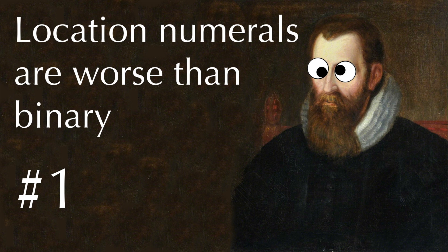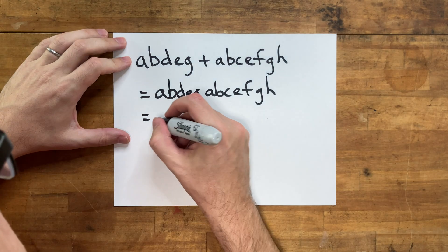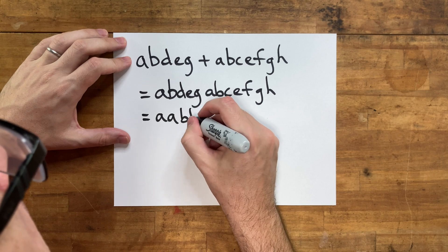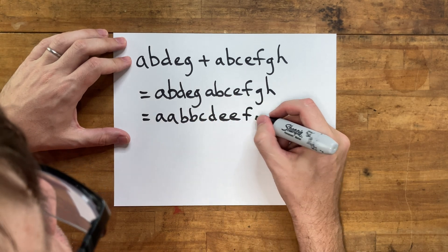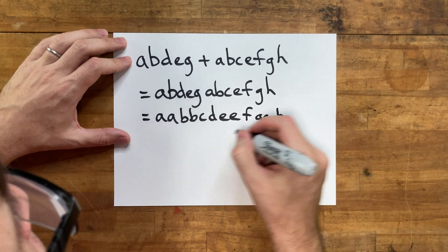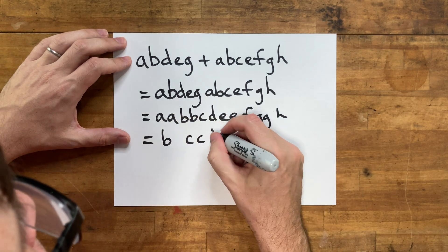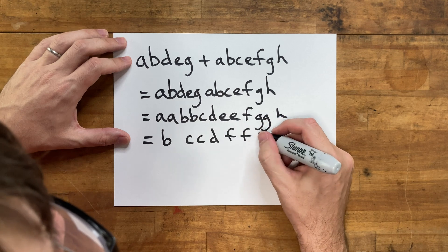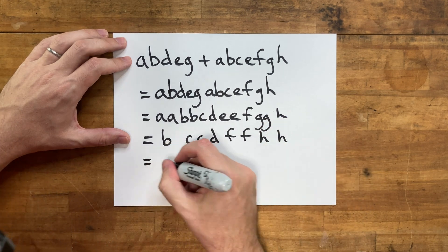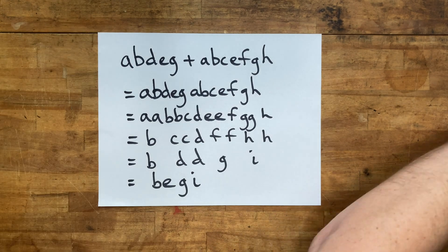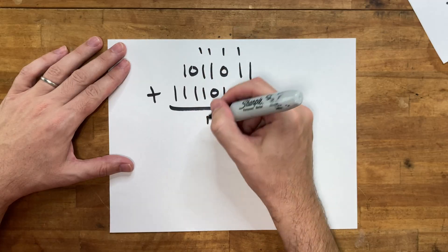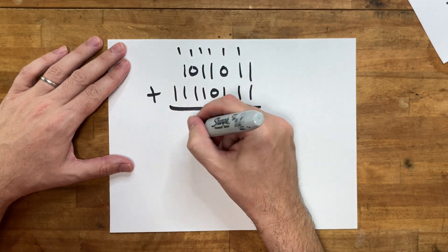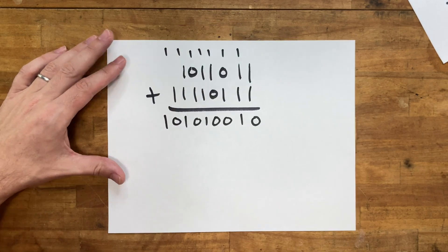Reason number one, addition and subtraction. Adding and subtracting location numerals requires sometimes several steps of abbreviation and extension. This is annoying. But for adding and subtracting with binary numbers, you can just use the ordinary addition algorithm. You just gotta remember to carry twos instead of tens. Like this addition that I just did with the location numbers. Here's how you do it in binary. It's easy.